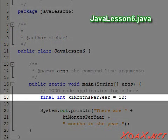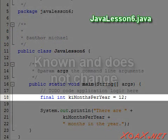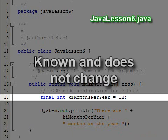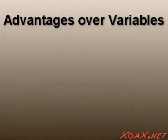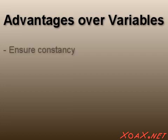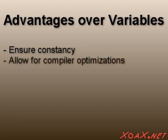This program demonstrates the proper use of a constant. That is, you should use a constant when the value to be stored is known and should not change. In these situations, constants do offer some advantages over variables. First, using them ensures that the value cannot accidentally be changed. Second, they allow the compiler a chance to optimize the code so that it can run faster and use less memory.